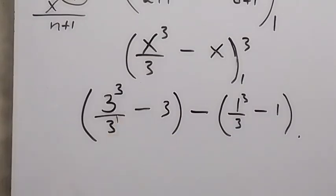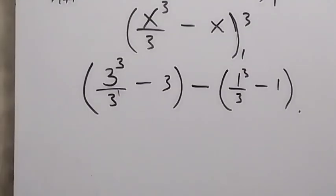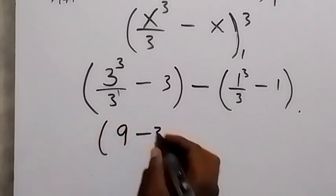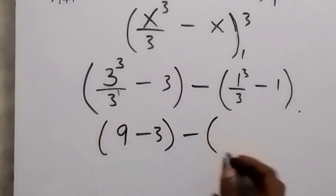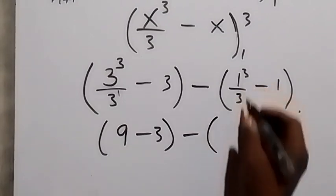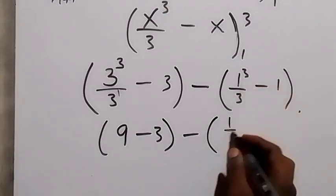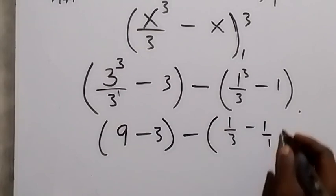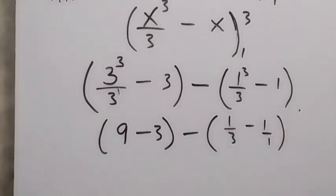So we have 9 minus 3 here, then minus this bracket. 1 raised to power 3, that's 1 over 3 minus 1.